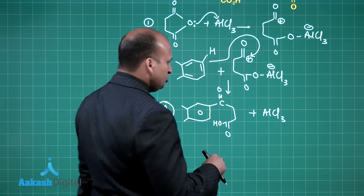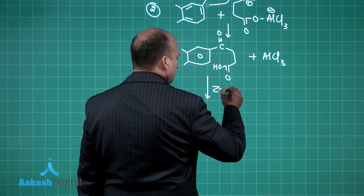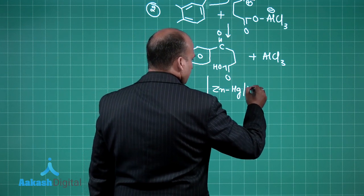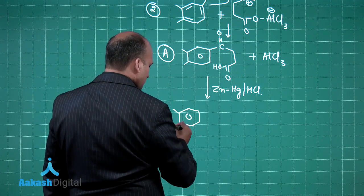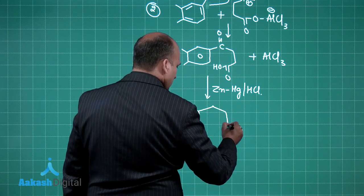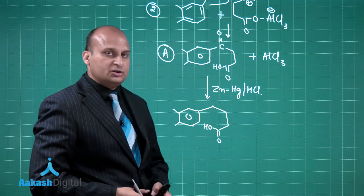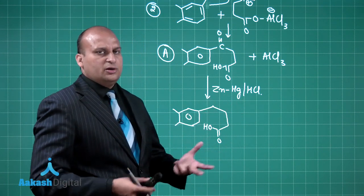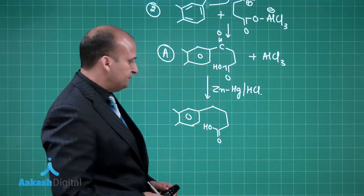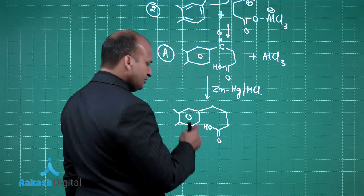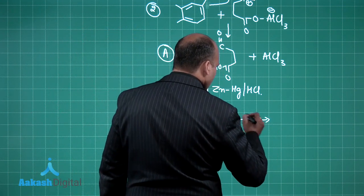Now this A is to be reduced by using zinc amalgam in the presence of HCl. So this carbonyl group will be reduced and this is the product. I hope you remember this is Clemmensen reduction. And by this, you are understanding that normally they are asking such mechanisms from the name reactions only.